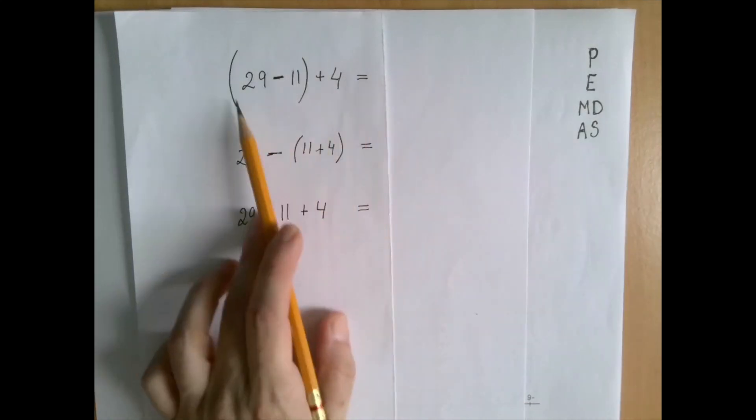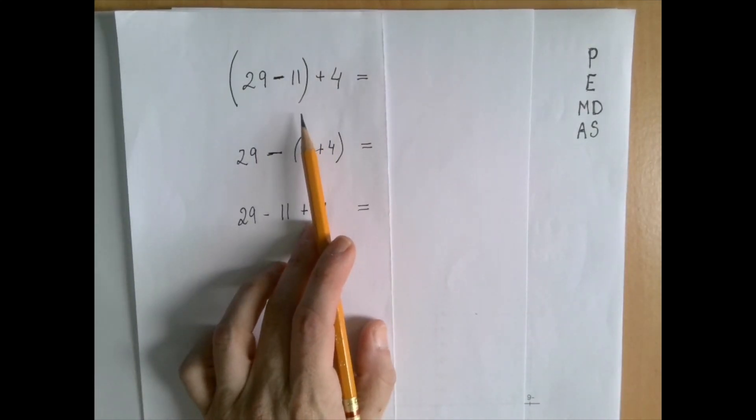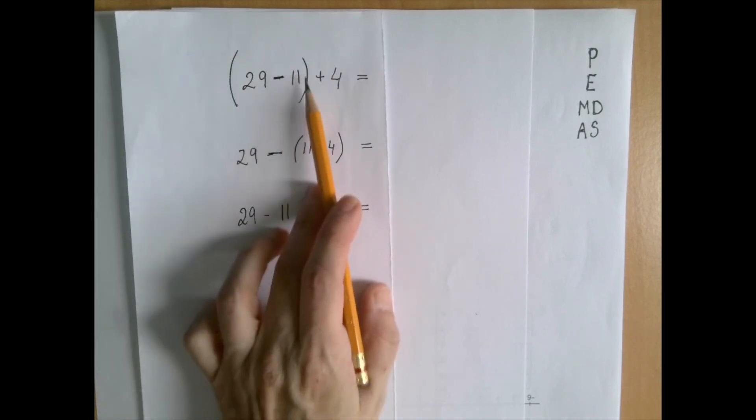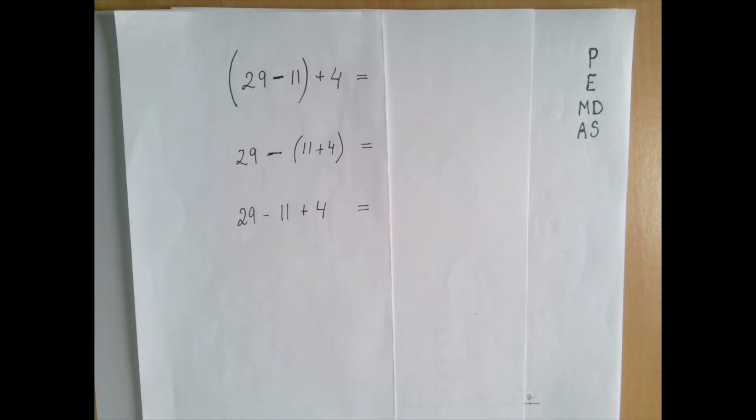In this first one, the order of operations is clear because of the parenthesis. So first we perform the subtraction in the parenthesis, 29 minus 11 is 18, and then 18 plus 4 is 22.